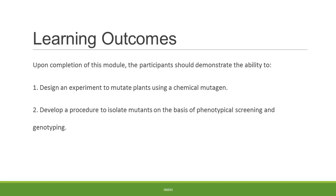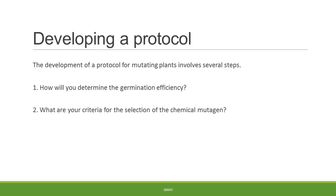Upon completion of this module, you should demonstrate the ability to design an experiment to mutate plants using a chemical mutagen, and develop a procedure to isolate mutants on the basis of phenotypical screening and genotyping. Participants also need to determine germination efficiency and develop criteria for the selection of the chemical mutagen.